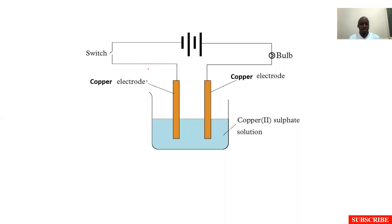Remember, when you use graphite or platinum, it's because these electrodes are inert. But in this case, copper electrodes are not that inert, and we might see the impacts affecting our electrolysis.